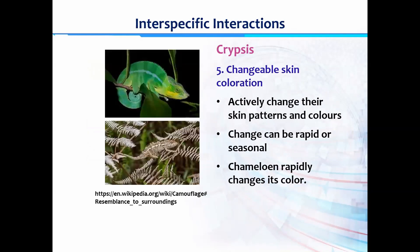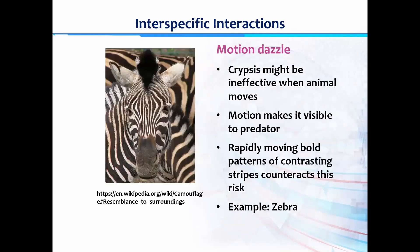Changeable skin coloration is also an interesting behavior observed in crypsis. It is commonly observed in the chameleon, which is capable of rapidly changing its skin color and patterns according to the changing environment. These changes can be very rapid or seasonal. That covers all the adaptations in crypsis.